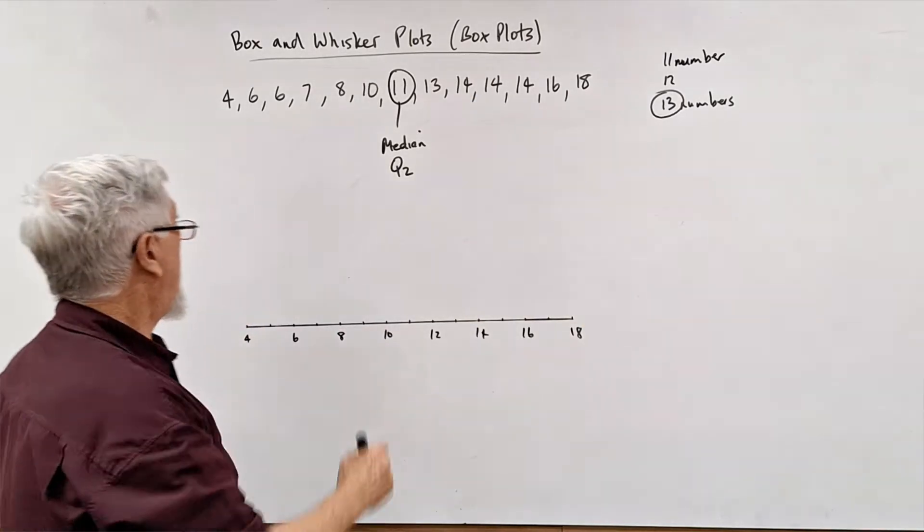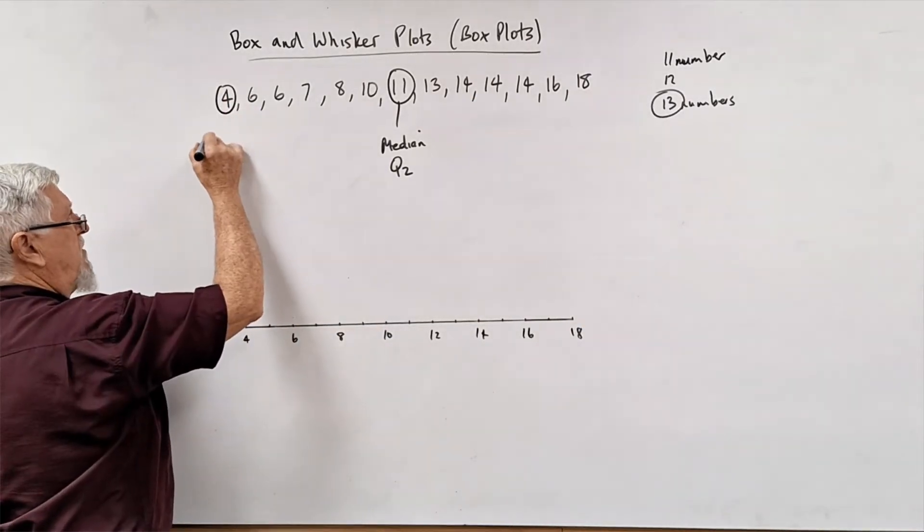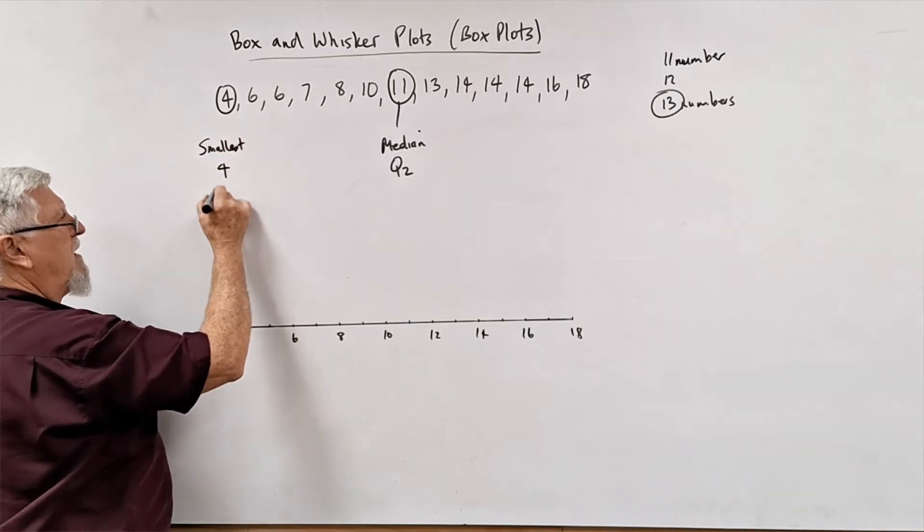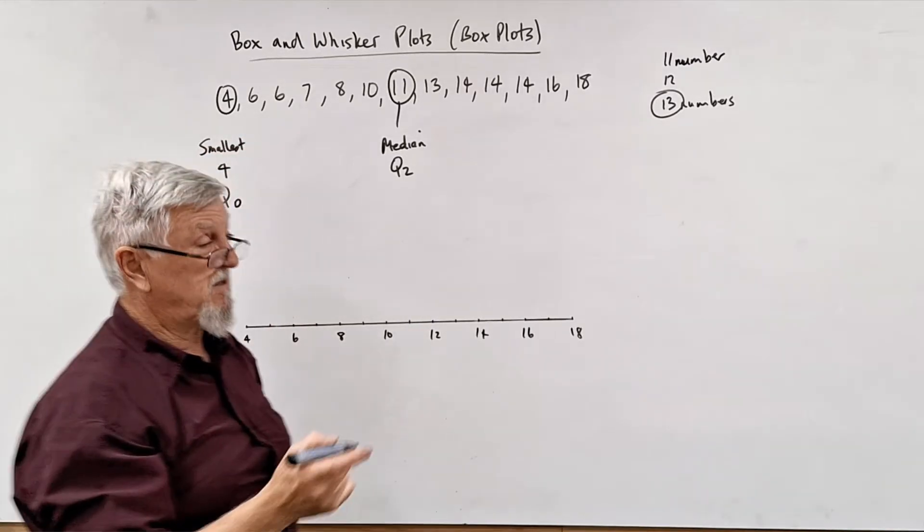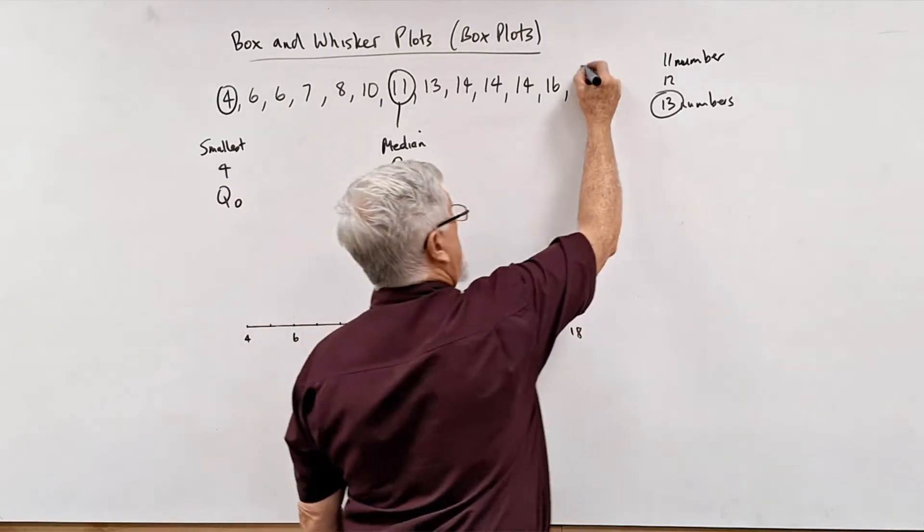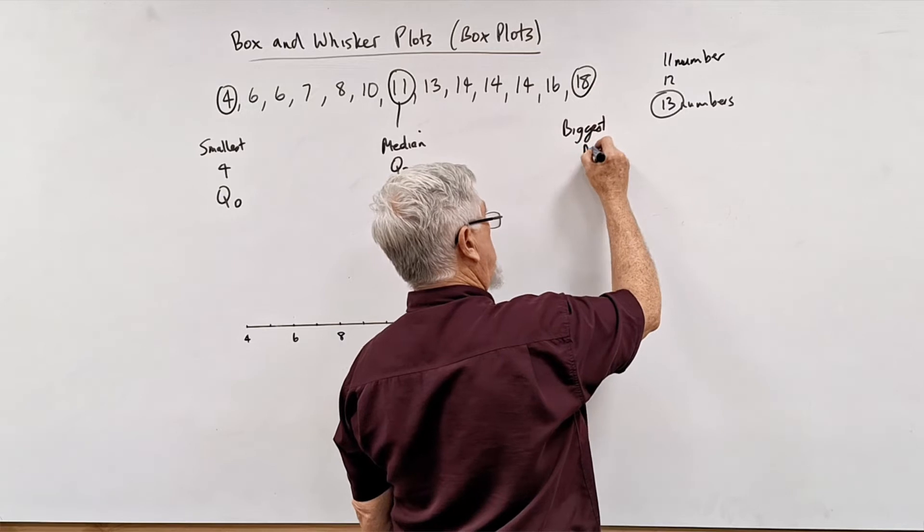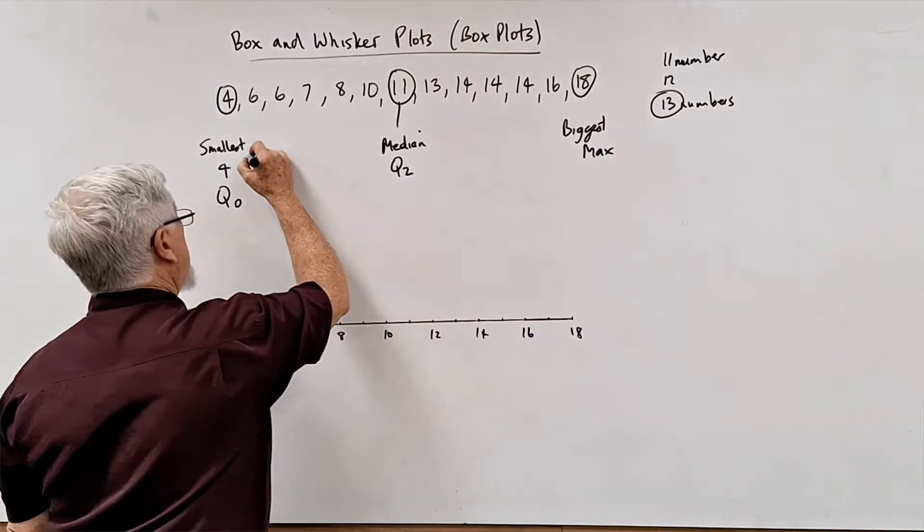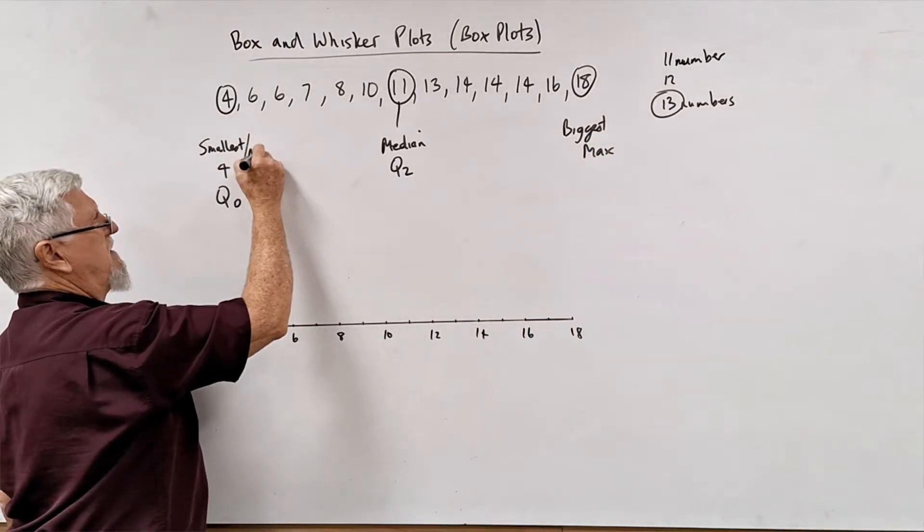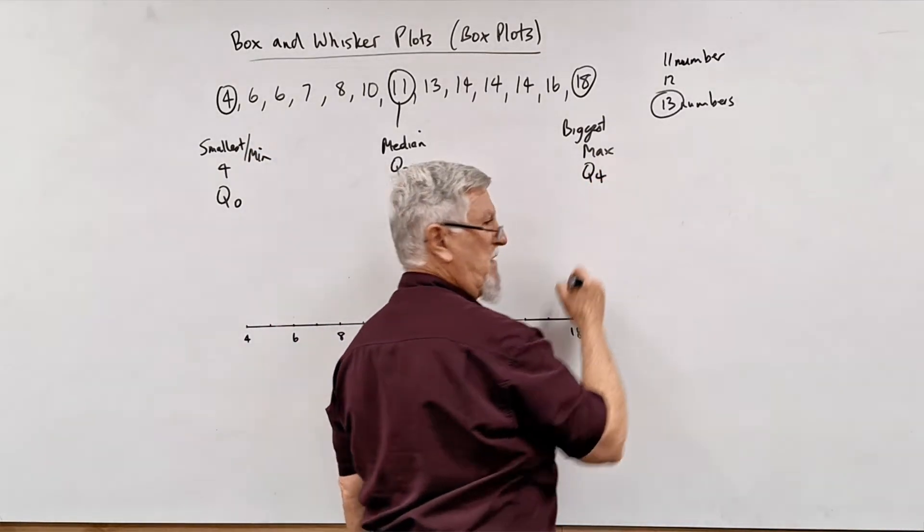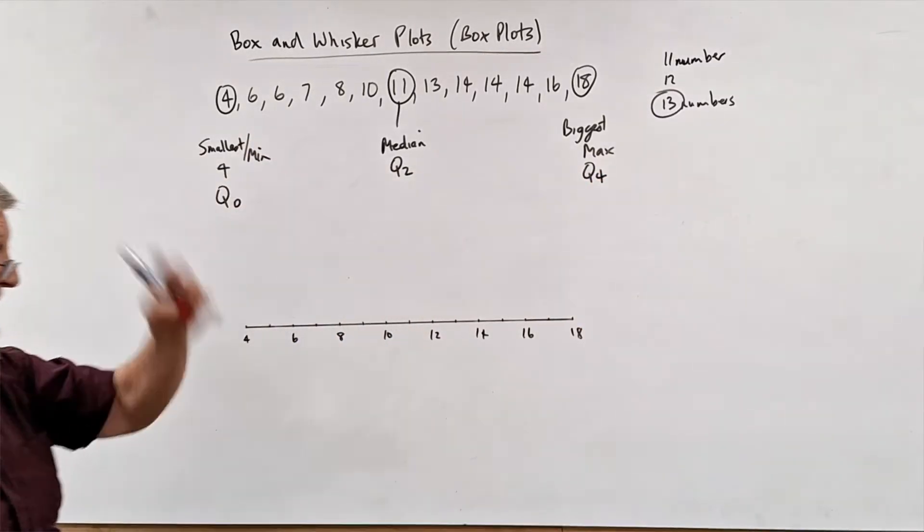And of course the obvious ones you've got is the min. I'm going to write this time the smallest, so the smallest is four and that's called Q0. It's like the starting number, and that one's the biggest, which we can call the max. I probably should write that that's the max and that's the min. And that's the fourth quartile, the end of the fourth quartile. So four quarters make a whole and that's where you get that one there.